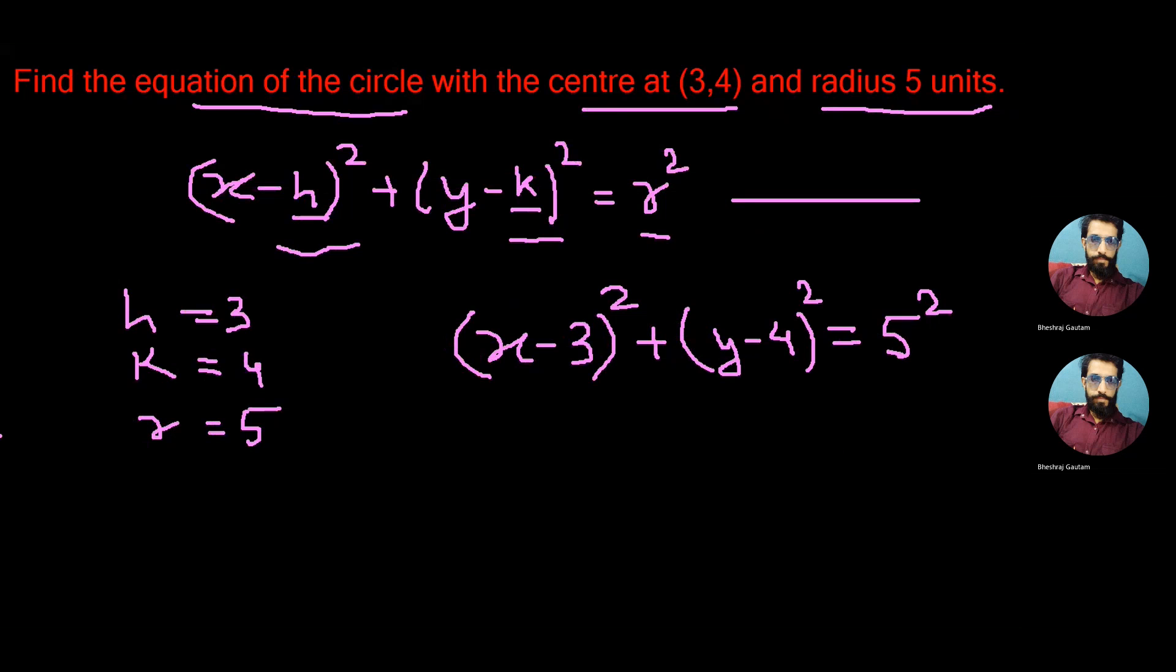Let's simplify this. It now becomes x² - 6x + 9 from (x-3)², and then plus y² - 8y + 16 from (y-4)² and is equal to 25.